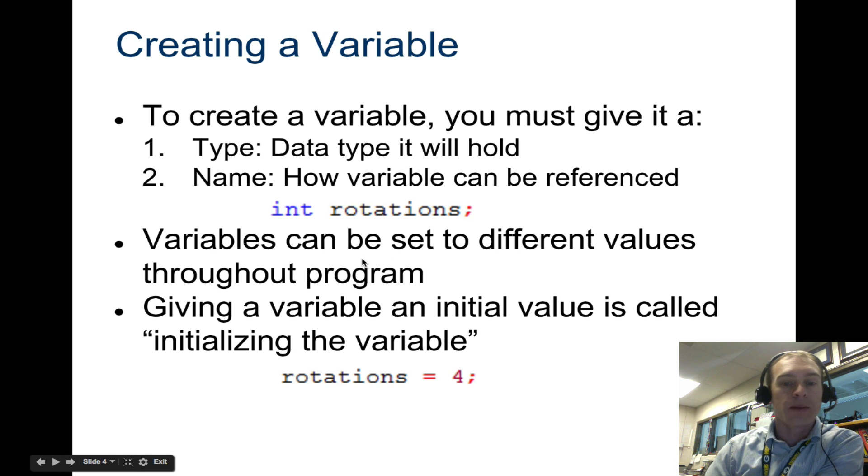So you can set the variable to different values, and whatever you give it initially is called initializing the variable. So if we say int rotations semicolon to the next line, and then we say rotations equals four. So right now we're setting it equal to whatever that means, the number four.